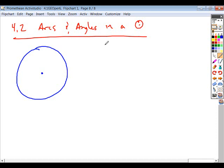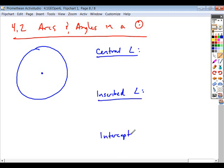In the first section, we had three terms that you need to be familiar with: central angle, inscribed angle, and intercepted arc.